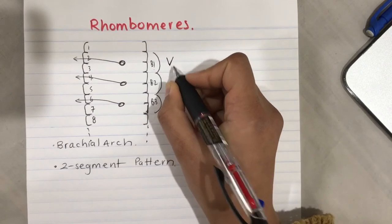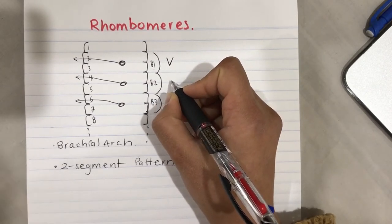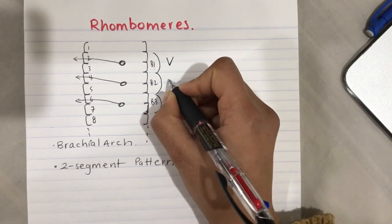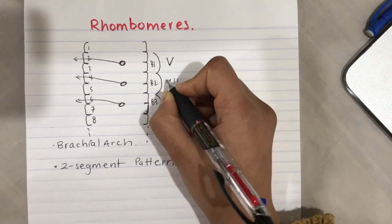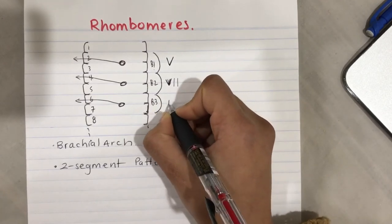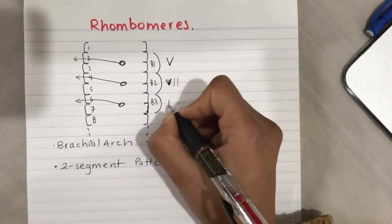Brachial arch 2 forms cranial nerve VII, the facial nerve, and brachial arch 3 forms the glossopharyngeal nerve.